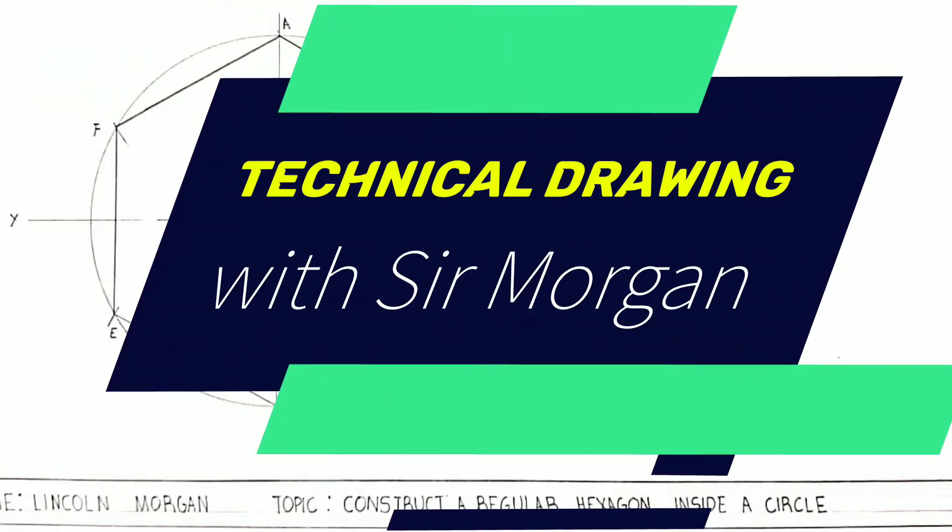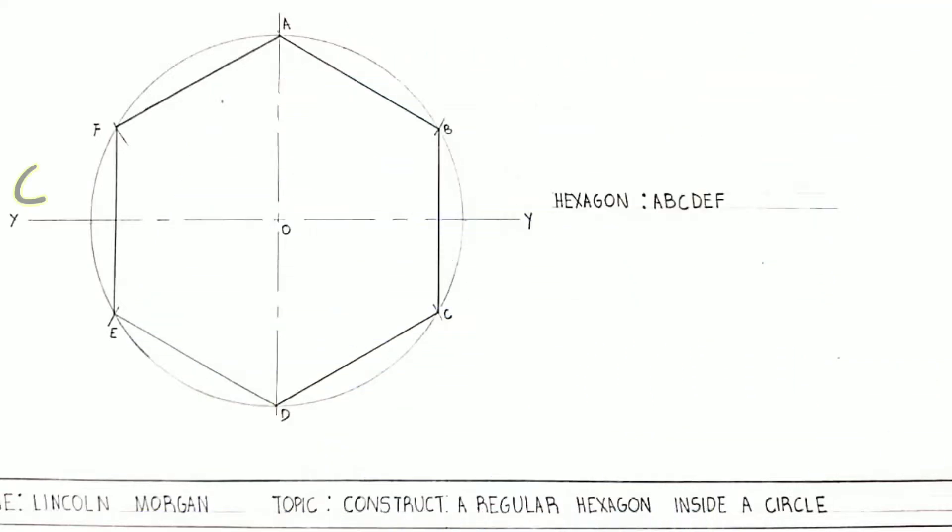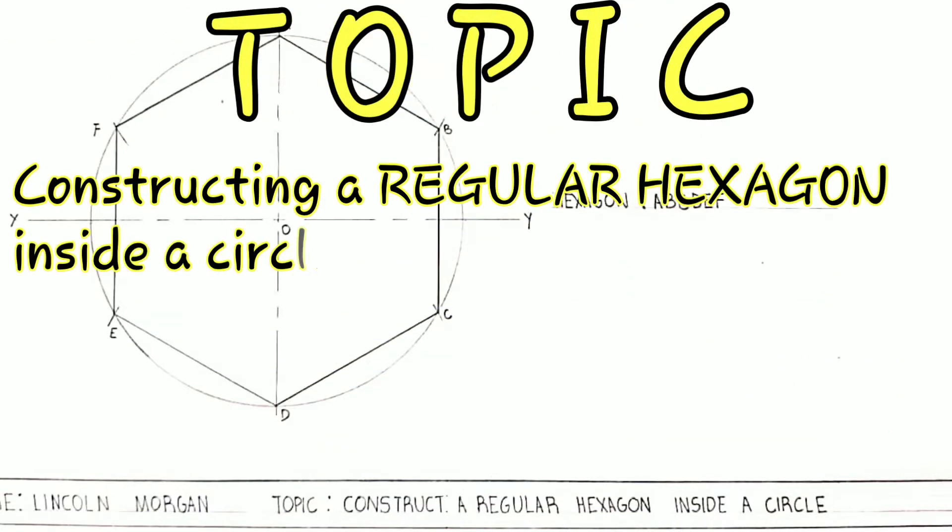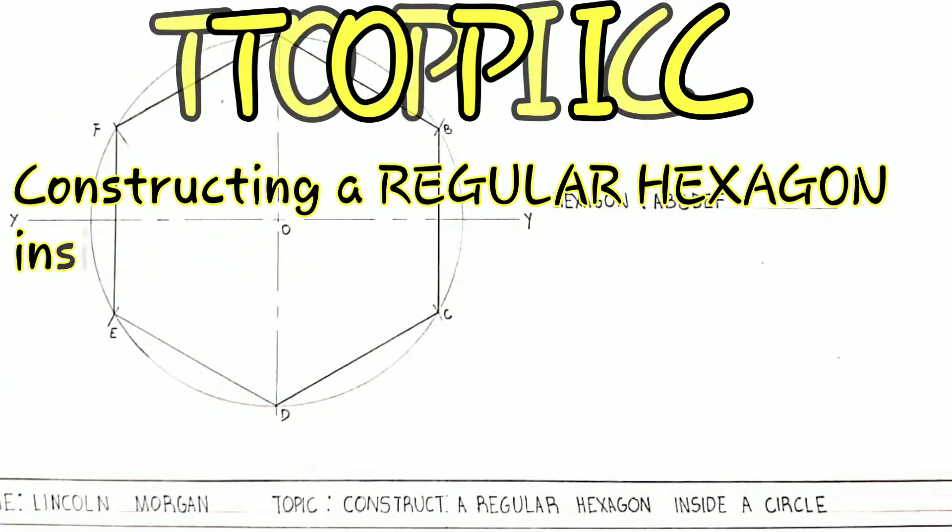Greetings everyone, Sir Morgan here from the technical department. Today I'll be showing you how to construct a regular hexagon inside a circle. In other words, the distance between opposite corners will be given.